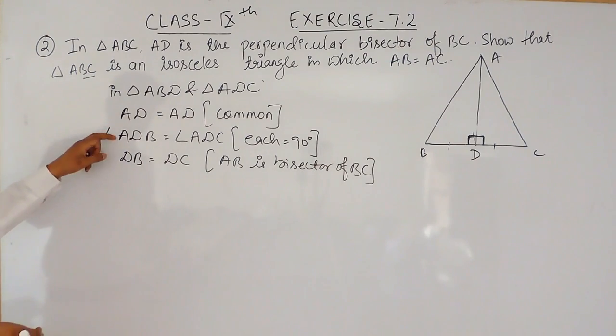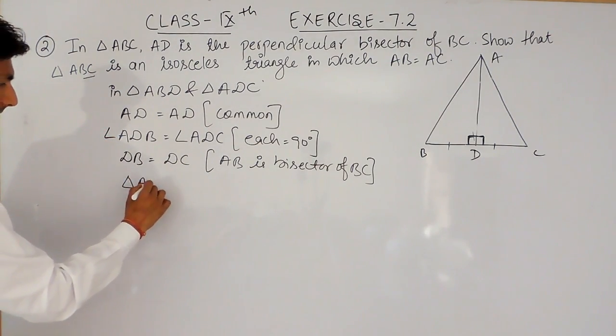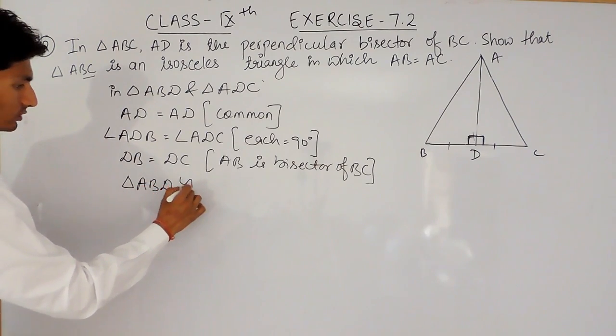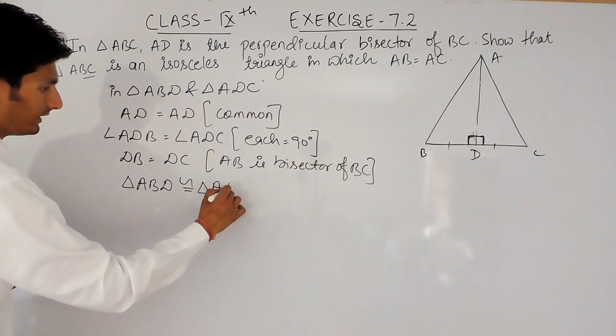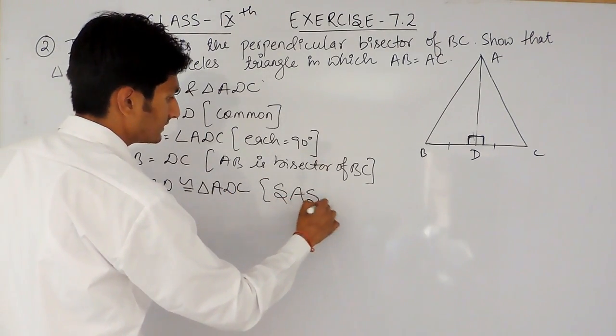So by side, angle, side, we can confirm that triangle ABD is congruent to triangle ADC. This is by side, angle, side property.